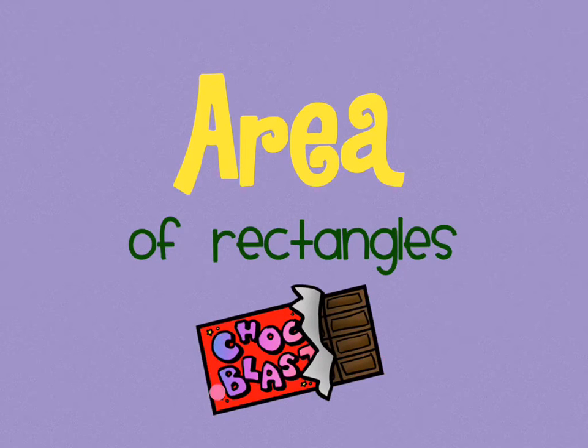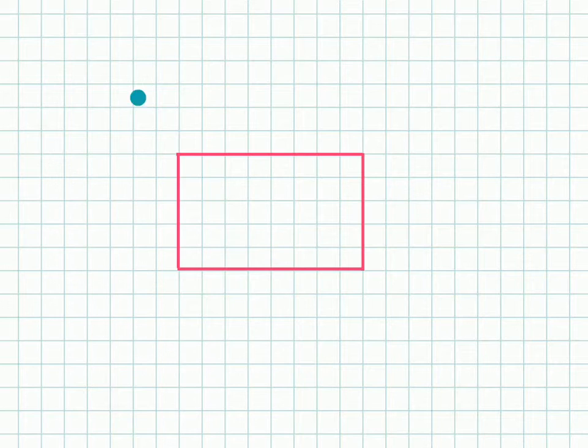What area is, is the amount of surface something takes up. So this is the area of this chocolate bar. We measure area in squares, so it might be helpful to have grid paper like this when you're starting out with the area of rectangles.